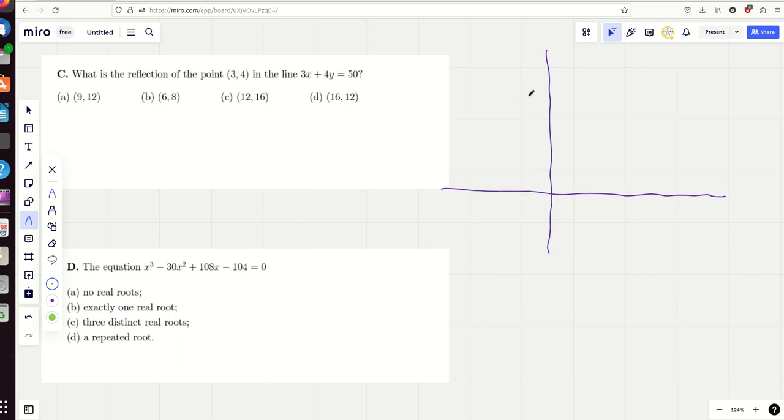3x plus 4 equals 50. Well, that kind of looks something like this. And what's more, the gradient of that is going to be minus 3 quarters. So it would be useful if we could find this point, and then we'll just, however we get from there to there, we'll apply it again to get from there to there, and we'll have reflected the point. Now, as the gradient of that line is minus 3 quarters, the gradient of this line is 4 thirds, because that should be at a right angle if it's going to be reflected perpendicularly in the line, which it should be.